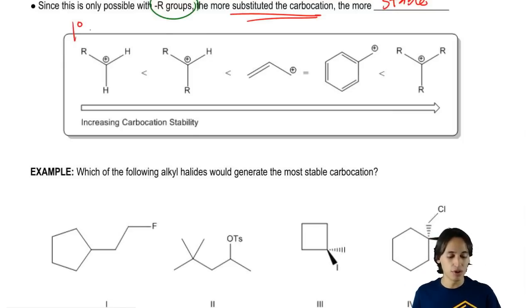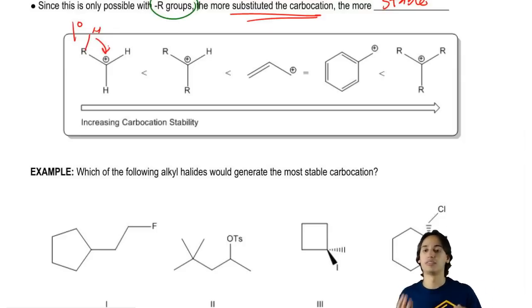This would be called a primary carbocation because I only have one R group that's going to have H's that can donate electrons because remember an R group just means it's a carbon with some H's on it. That would be an example of a really bad carbocation because it only has one side donating electrons.